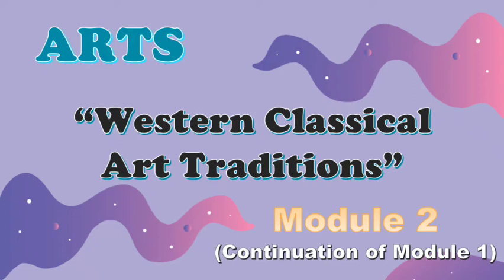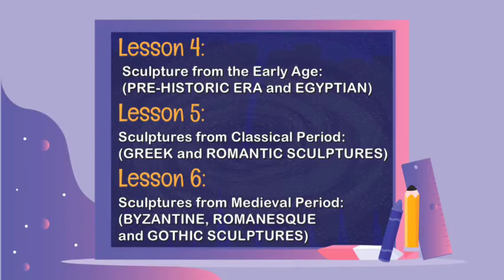In the second module in Arts, we will focus on the different sculptures made during the ancient, classical, and medieval art periods. This is the continuation of our Arts Module 1 lessons. In the last module, we discussed Lesson 1 to 3. This time in Module 2, we will continue the discussion of Lesson 4 to Lesson 6.